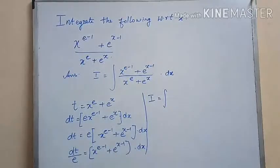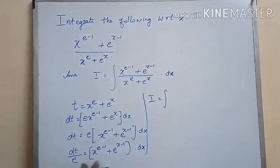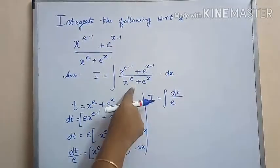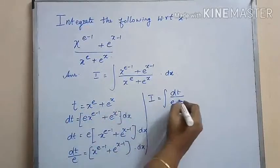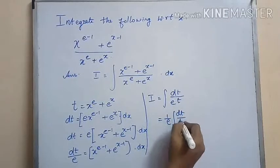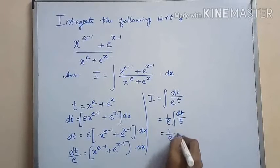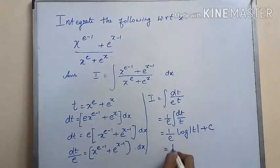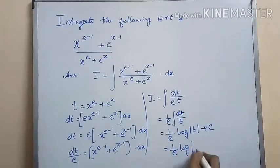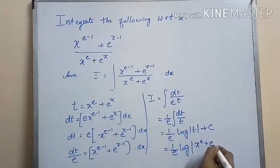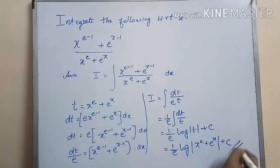Substituting these values in I, we get the integral of dt by e into 1 by t. Bringing out 1 by e outside, we integrate dt by t, which gives log of modulus t plus c. So the result is 1 by e into log of modulus t plus c. Resubstituting the value of t, the final answer is 1 by e into log of modulus x to the power of e plus e to the power of x, plus c.